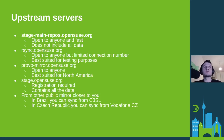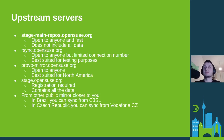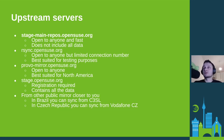We also have rsync.opensuse.org, which is also open to anyone but has limited bandwidth and a limited number of connections. I would suggest it is more suited for testing purposes; for production it would be rather slow. If you are in North America there is an open server at provo-mirror.opensuse.org, which is best suited for people in North America if they are having issues fetching from mirrors in Europe.